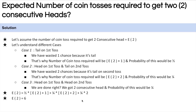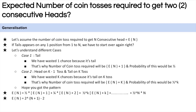Solving this equation, you will get the answer six — the expected number of coin tosses required to get two consecutive heads is six. Now, in an interview, you might be asked about three or five consecutive heads. How would you solve that?